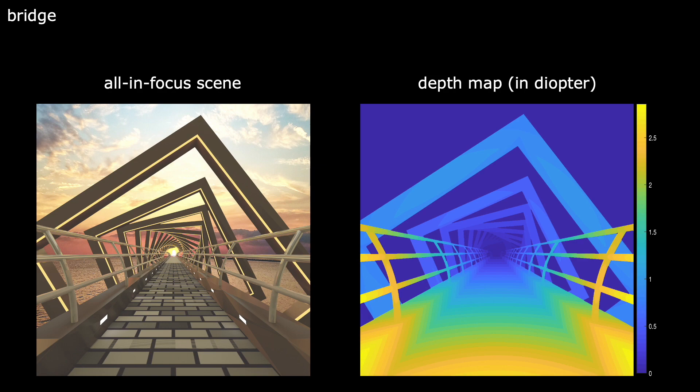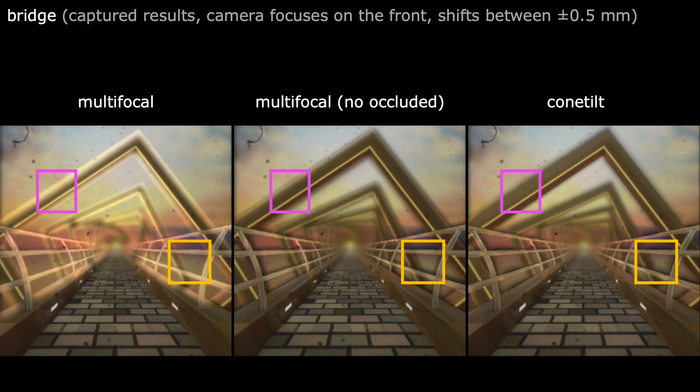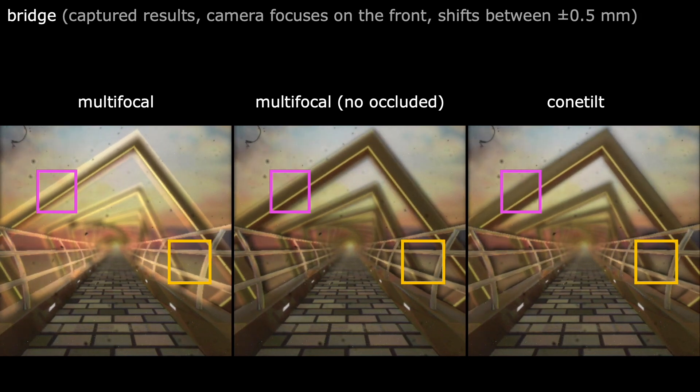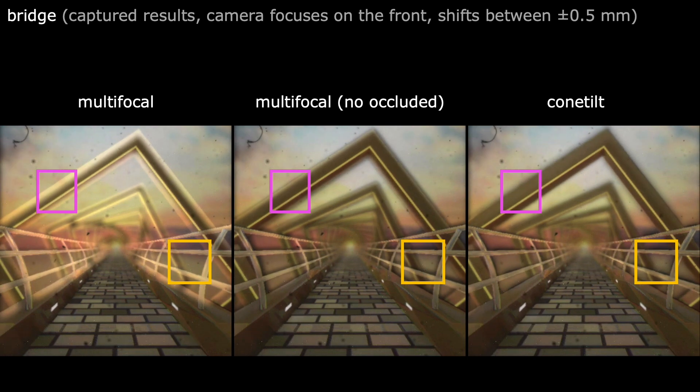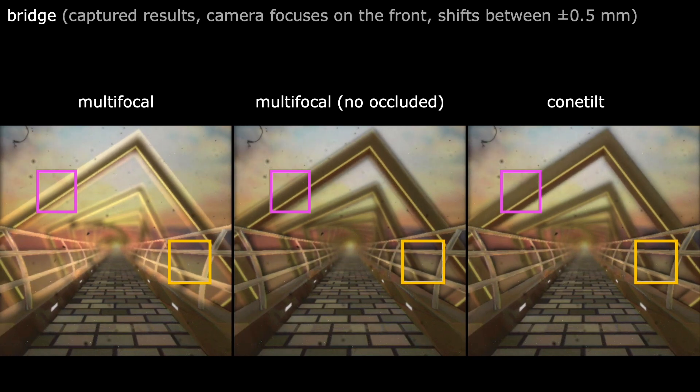Here is another scene. First, we show the captured results when the camera focuses on the front. Similar to previous results, the ConeTilt display effectively prevents light leakage from the background.